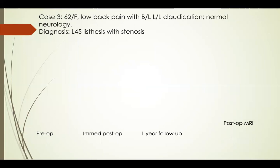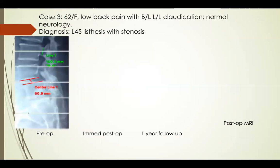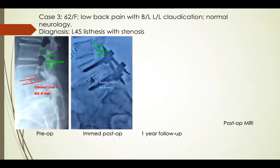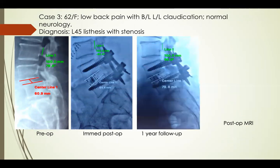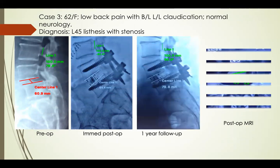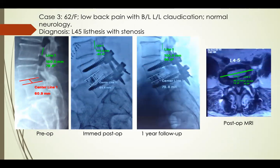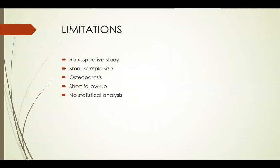A 62-year-old female with low back pain: this is the pre-operative X-ray, the immediate post-op X-ray which is fine, and a 1-year follow-up which shows cage subsidence. Even though there is cage subsidence, there are no clinical complaints.